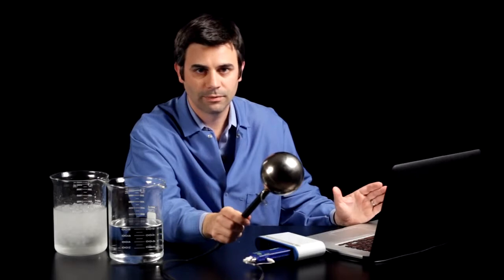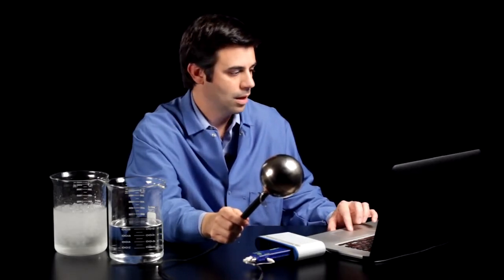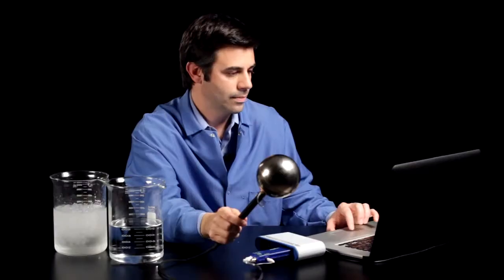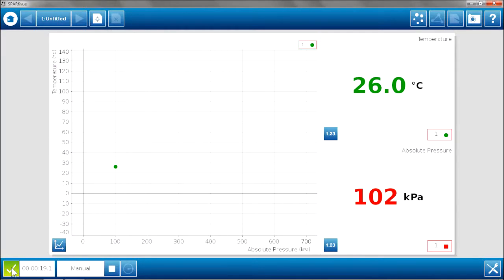I am just going to leave this in the room and monitor the temperature and pressure to make sure that they are stable. I can also look at the little dot over here to make sure that it is not moving around too much on the graph. And it looks like we have a pretty stable condition right now. So I am going to hit Keep to save that point.